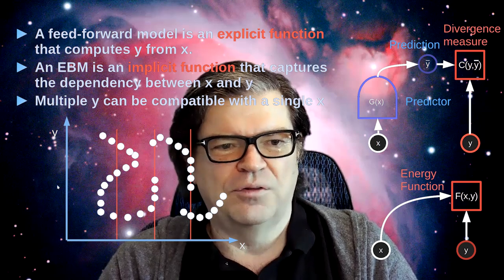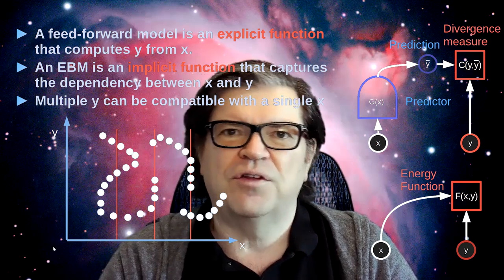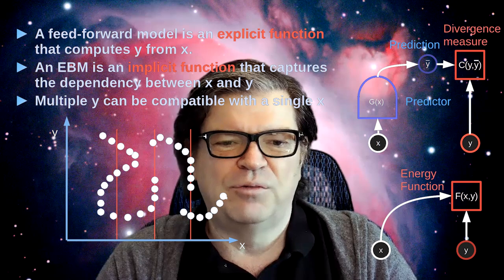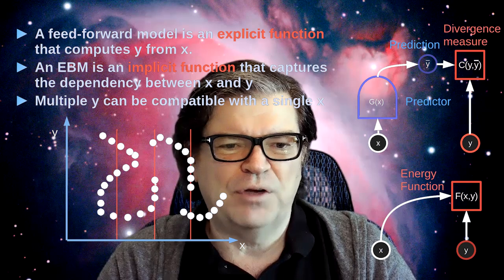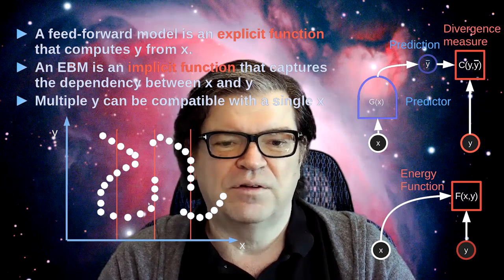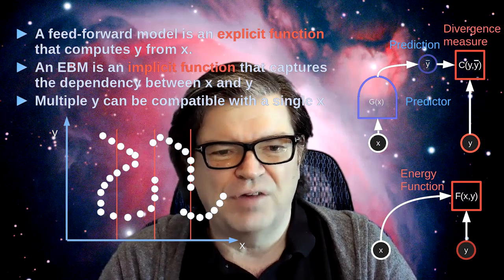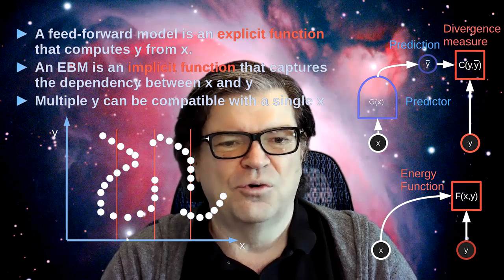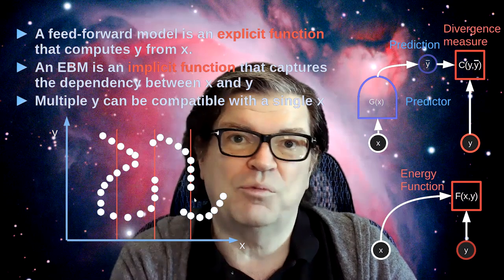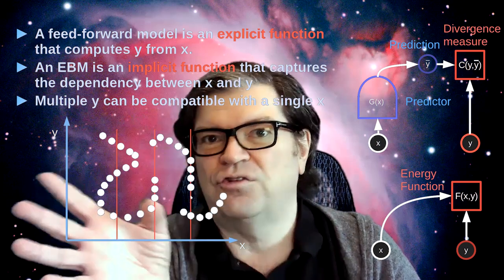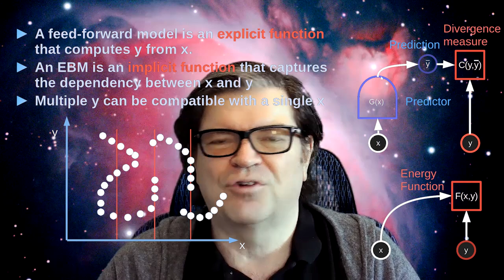Here is a more complicated situation where we have two scalar variables, x and y. X is observed and y is what we need to predict. The data observed are black dots, and for any particular value of x, there are multiple values of y that seem compatible with it — sometimes just an isolated value, sometimes a whole range. It's clear we can represent this dependency by an energy function, but not by a function that just outputs a single hypothesis about y.